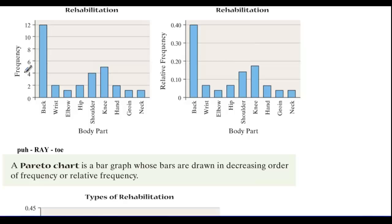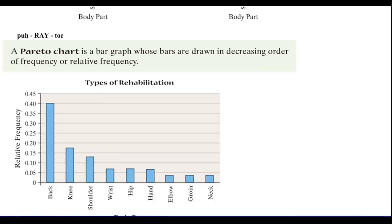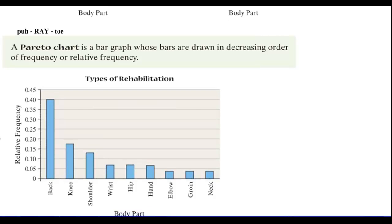There's a special bar graph called a Pareto chart. A Pareto chart is a bar graph whose bars are drawn in descending order of frequency or relative frequency. Descending order is important — you start with whatever occurs the most and work your way down. This lets you quickly identify what occurred the most and the least.